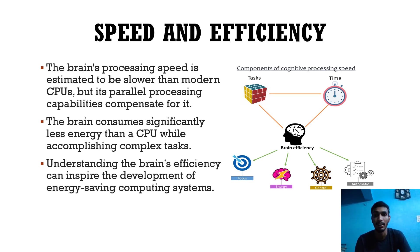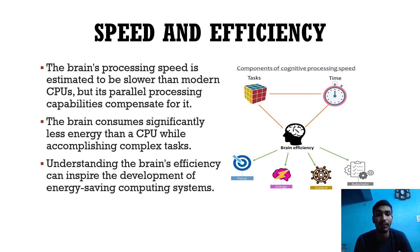Speed and efficiency: the brain's processing speed is estimated to be slower than modern CPUs, but its parallel processing capabilities compensate for this. The brain consumes significantly less energy than a CPU while accomplishing complex tasks. Understanding the brain's efficiency can inspire the development of energy-saving computing systems.